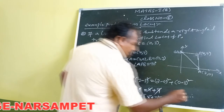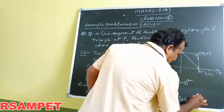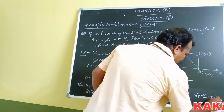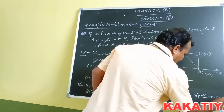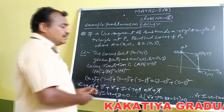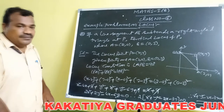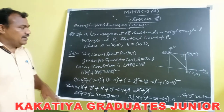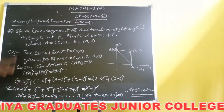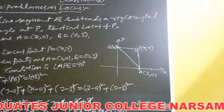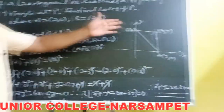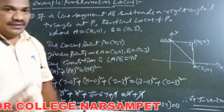Finally, the locus equation of P is x² plus y² minus 2x minus 3y is equal to 0. This is the required locus equation of P such that the line segment AB subtends a right angle at point P.